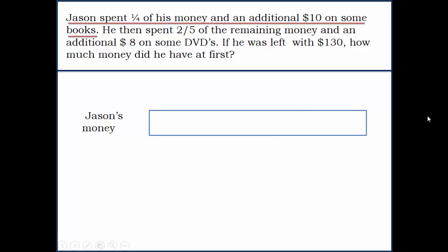Jason's money is represented by this box. He spent one-fourth of his money, which means dividing it into four parts. One part of his money plus an additional $10 is spent on books. We don't know exactly where this $10 falls, so we're just putting it as an approximate value here.